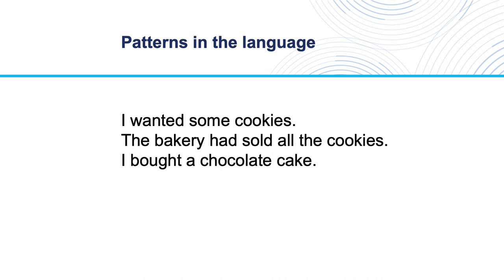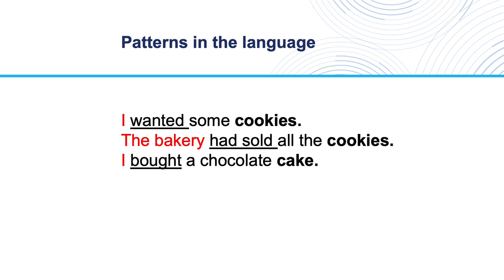For example, you can see patterns in English in examples like this: 'I wanted some cookies.' 'The bakery had sold all the cookies.' 'I bought a chocolate cake.' When we look for patterns, we need to find things that are the same in all the sentences. First, we can see that they all have a verb — a word that refers to activities of wanting, selling, and buying. Second, each verb has an actor or an agent who does the activity: I want, the bakery sells, and I buy. Third, each sentence has something — a noun — that receives the action: I want some cookies, the bakery sells the cookies, I buy a cake.